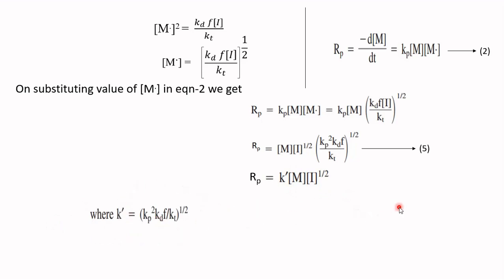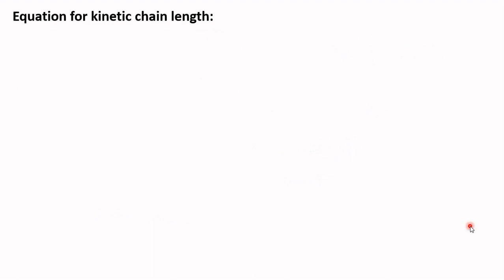After substituting the value of [M•] and simplifying, we get: r_p = k'·[M]·[I]^(1/2), where k' is a composite rate constant. This equation states that the rate of formation of polymer is proportional to the first power of monomer concentration and the square root of the initiator concentration.